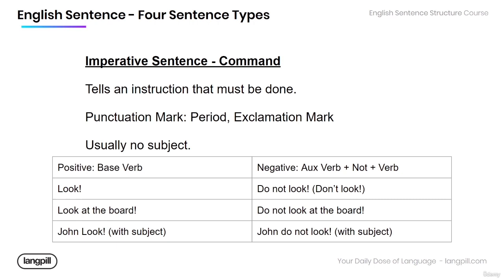These are imperative sentences — commands. If you want to include the subject, you can: 'John, look.' For the negative form, you use an auxiliary verb — 'do' or 'have' — then 'not,' then the verb: 'Do not look' or 'Don't look.' Or 'Do not look at the board' / 'Don't look at the board.' And if you want to include the subject: 'John, do not look at the board.'